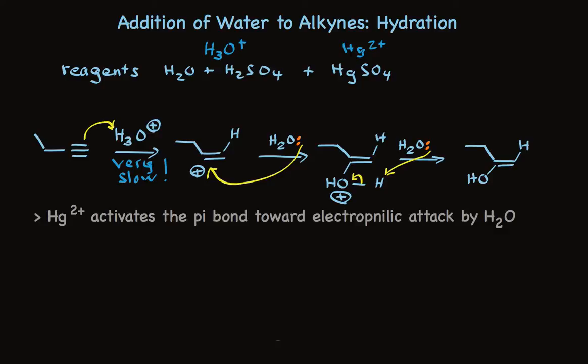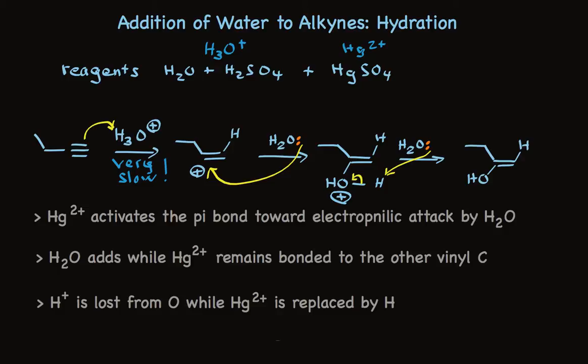The mechanism needs to take into consideration the fact that mercuric ion increases the rate of this reaction. The mechanism needs to show water adding while the mercuric ion remains bonded to the other vinyl carbon, so we don't make a vinyl carbocation. And thirdly, a proton will have to be lost from water while a mercuric ion is being replaced by a hydrogen. All this is accommodated by writing the following mechanism.